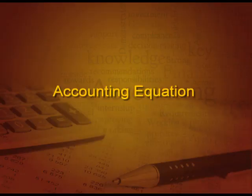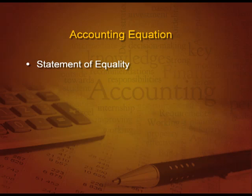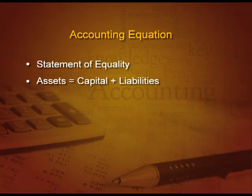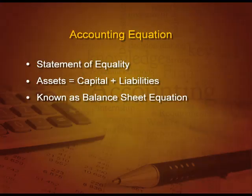Let us see the next topic: the accounting equation. This is a very important topic because it will explain all the accounts in one go. This is also called the statement of equality, which means debit will be equal to credit. The accounting equation is: Assets = Capital + Liabilities. This is also known as the balance sheet equation.